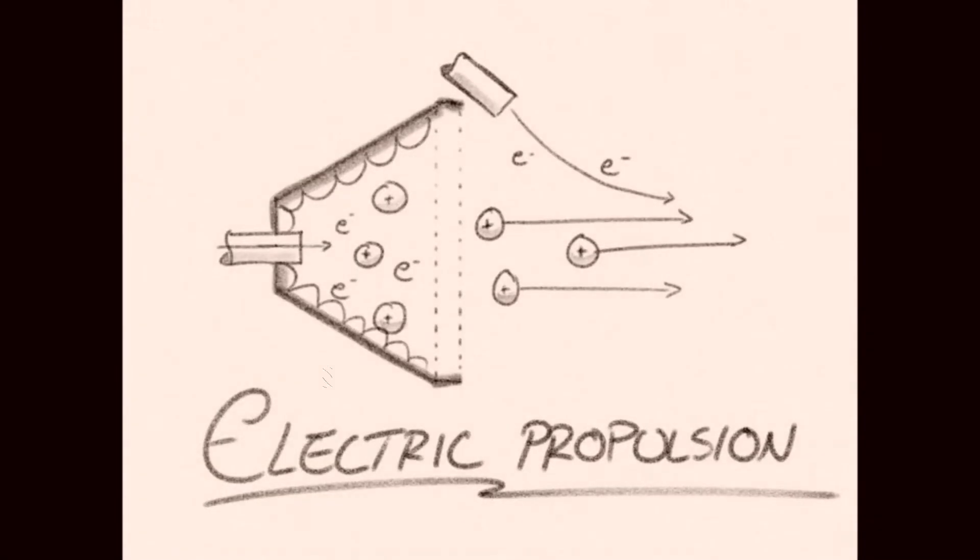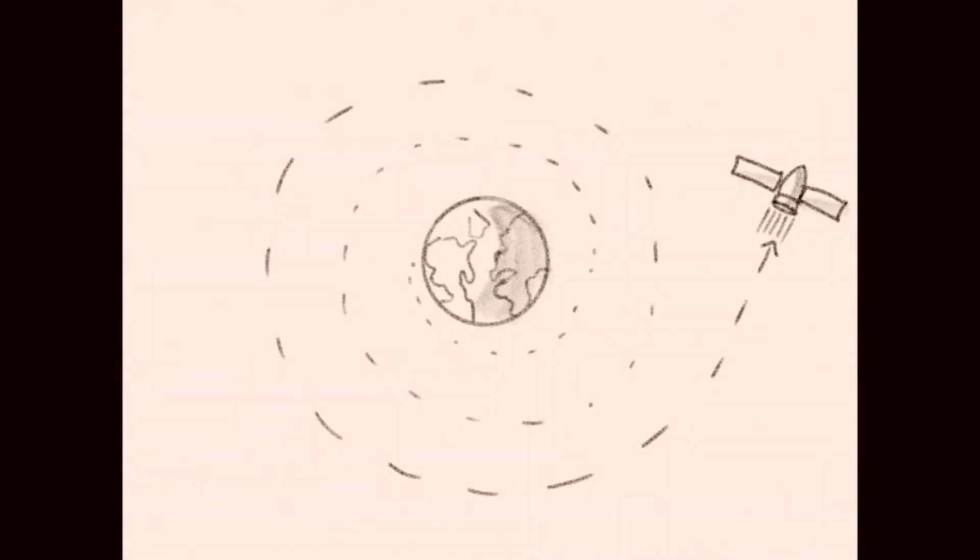When external electric energy is supplied to the propellant, it is called electric propulsion. This form of space transit is highly fuel efficient at the expense of low but continuous thrust.